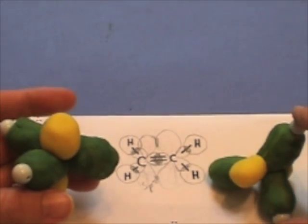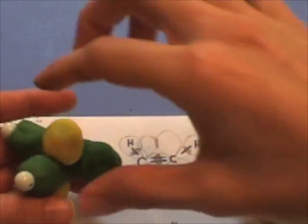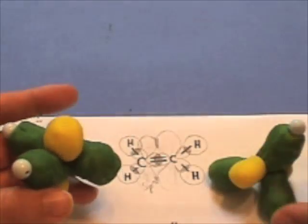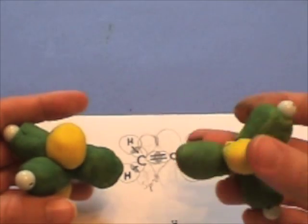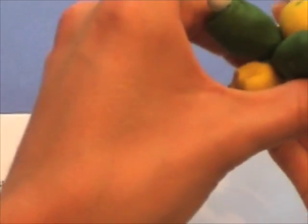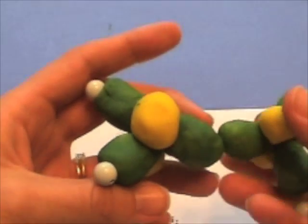So I've added the two hydrogens on this carbon and then two hydrogens on that carbon. Now the question is when these two carbons come together to bond and form a double bond, do they come together like this where the hydrogens are on different planes or do they come together where the hydrogens are all on the same plane?